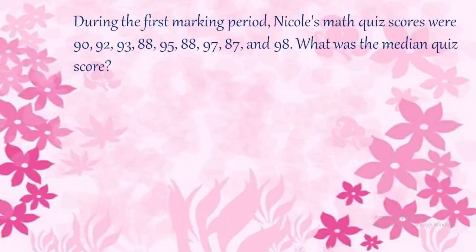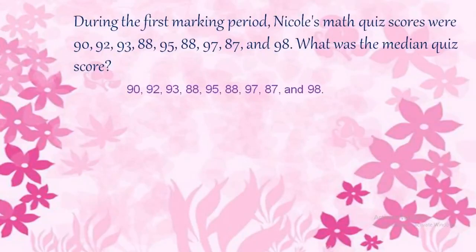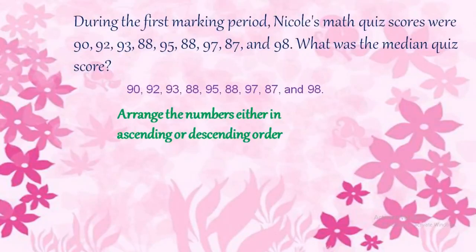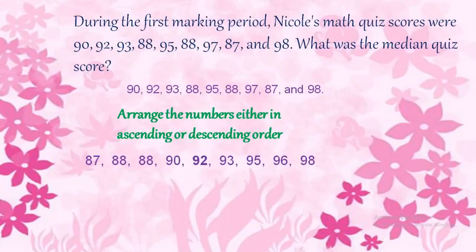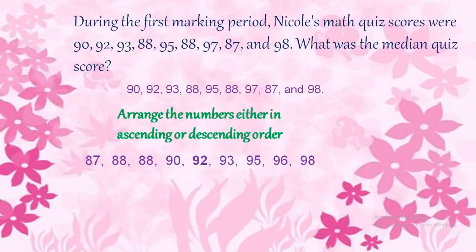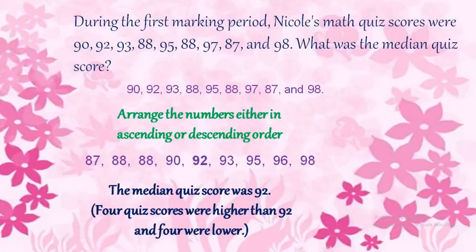To find the median, we have to arrange the given data either in ascending order or in descending order. Here, the data is arranged in ascending order. There are nine numbers. We are going to find the middle-most number after the arrangement. So, we can say that the median quiz score was 92.